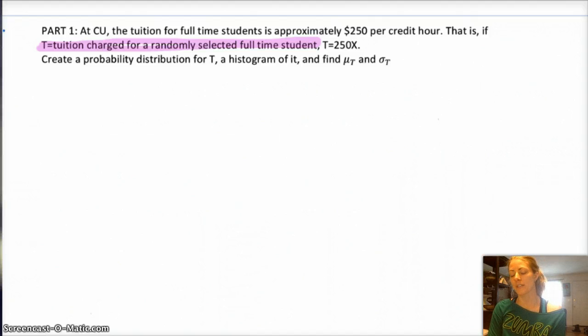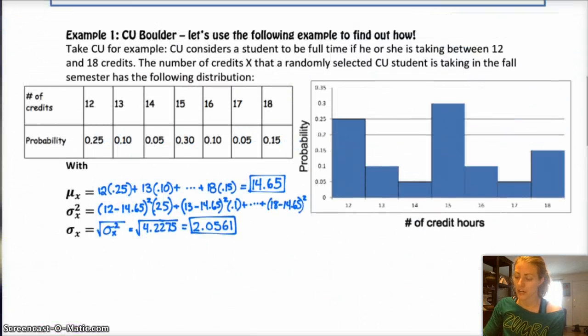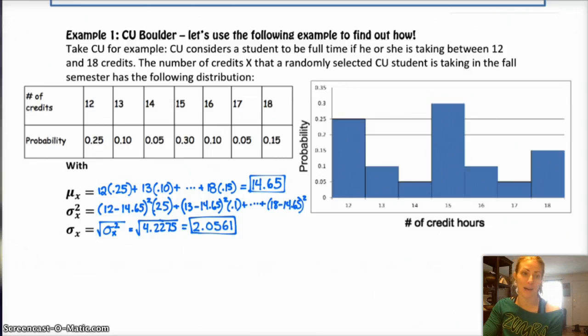Okay, so this is going to look really similar to our last chart, right? So, basically, I could copy and paste that chart, except instead of the number of credit hours, now, I'm having the number of credit hours times 250, because remember, if they're taking 12 credit hours, they're paying 12 times $250.